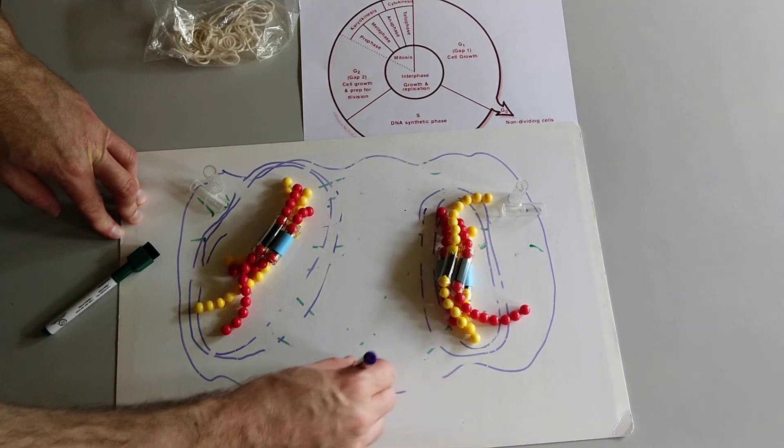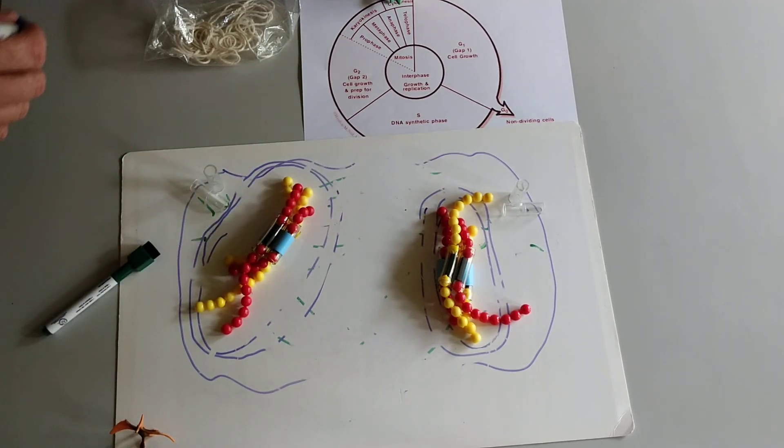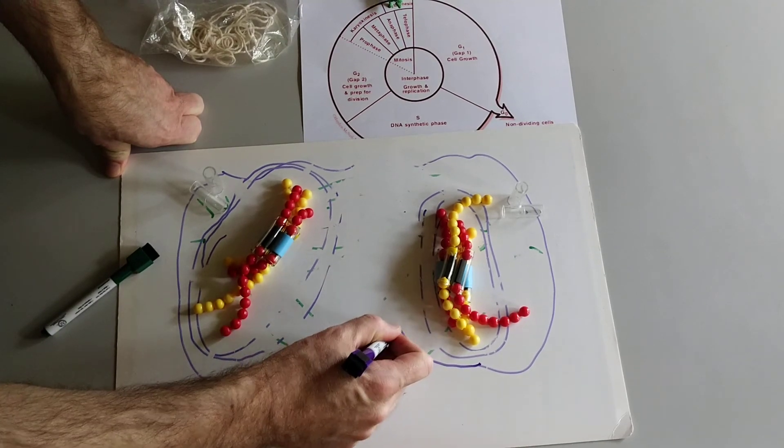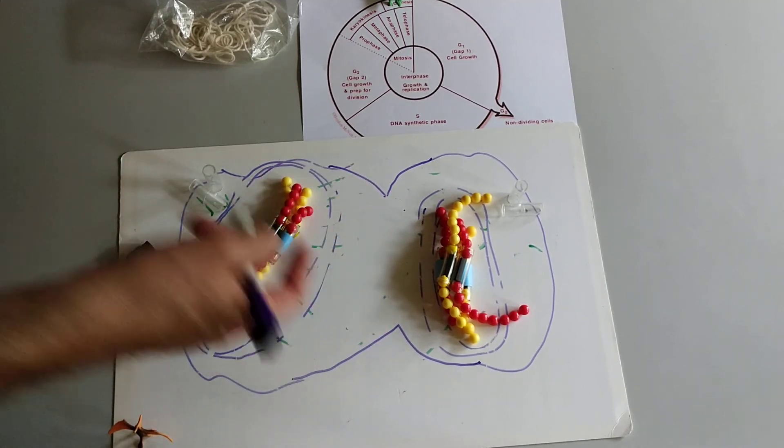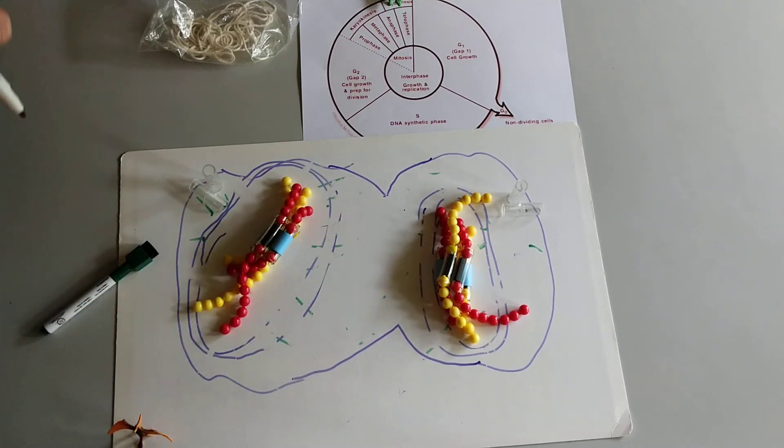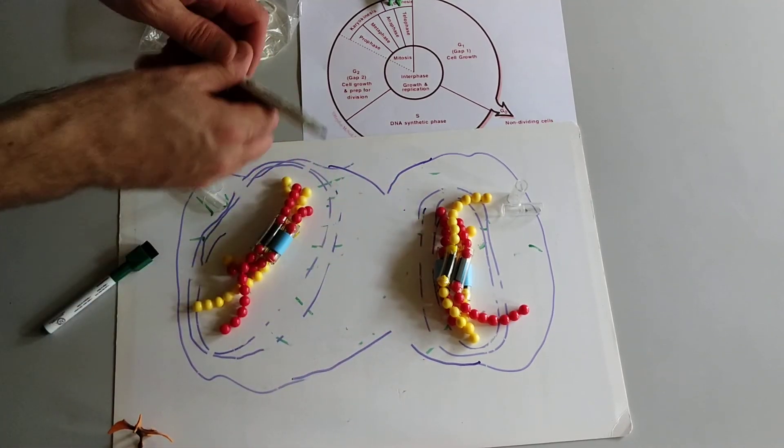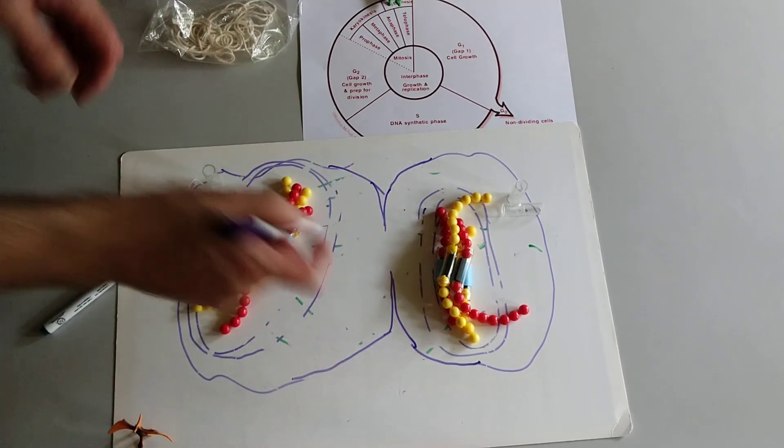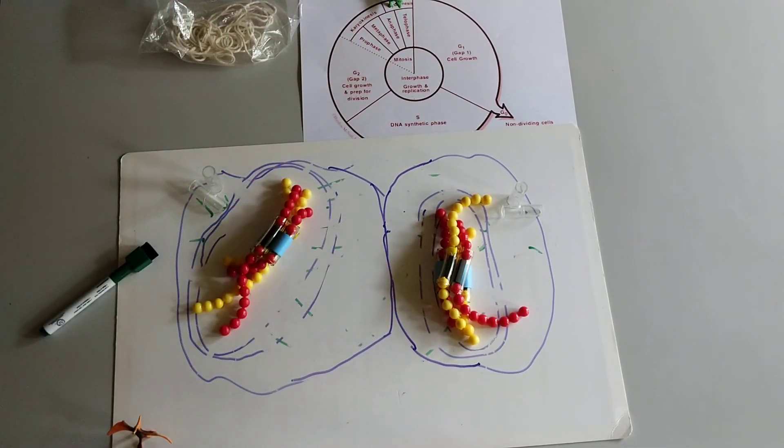And the way that that happens is a little bit different between plants and animals. I'm going to pretend that this is an animal cell. And that membrane starts to constrict in the middle. And it starts to constrict where those chromosomes lined up during metaphase. And then it constricts even more until finally it is two separate cells.